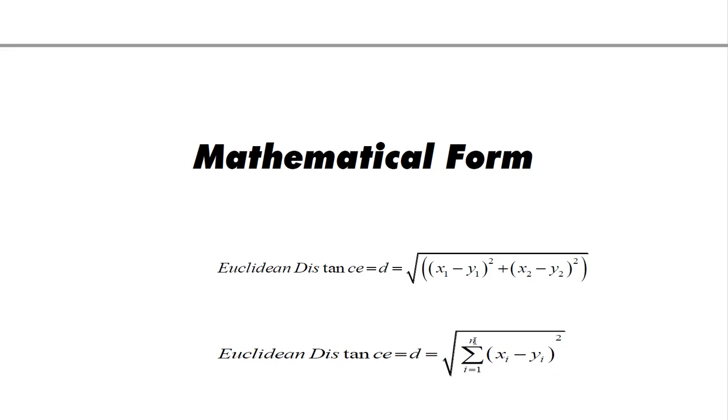If we have a total number of four observations, then this is (x1 minus y1) squared, (x2 minus y2) squared, (x3 minus y3) squared, (x4 minus y4) squared. Similarly, if n is 5, we can add one more observation (x5 minus y5) squared. This is the formula for Euclidean distance which is used to find the distance between any two points.